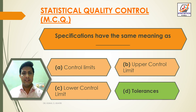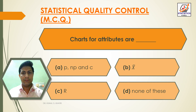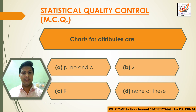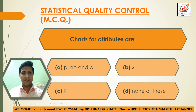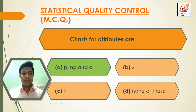Question 5: Charts for attributes are: Option A: P and C charts, Option B: X-bar, Option C: R chart, Option D: None of these. Answer: Option A — P and C charts are charts for attributes.